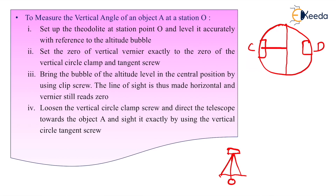The vertical circle has two verniers — vernier C and vernier D — and the circle is divided into quadrants of 0 to 90 degrees. So the minimum is 0 degrees and maximum is 90 degrees. Set verniers C and D to 0-0 or 90-90 degrees. Then bring the bubble tube of the altitude level to the central position using the clip screw. The line of sight is thus made horizontal and the vernier still reads zero. Adjust the bubble tube so it reaches the center of its run.